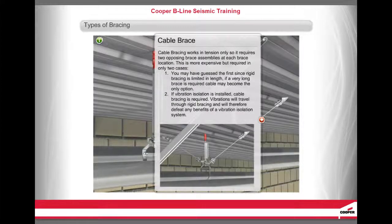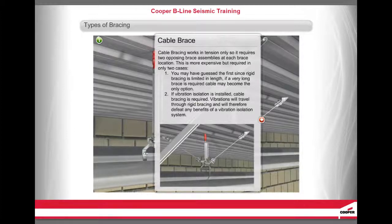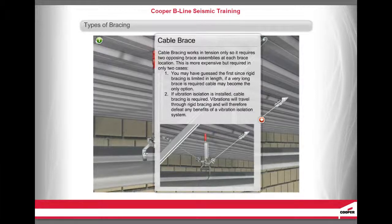Cable bracing works in tension only, so it requires two opposing brace assemblies at each brace location. This is more expensive but required in only two cases: first, if a very long brace is required, cable may become the only option; second, if vibration isolation is installed, cable bracing is required, because vibrations will travel through rigid bracing and defeat any benefits of a vibration isolation system.